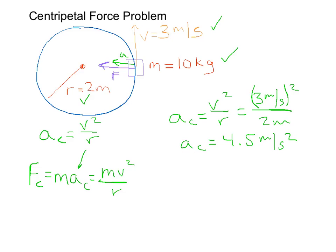Taking that and plugging it into the centripetal force equation, we can solve for FC, and that's simply equal to mass times centripetal acceleration. So that's equal to 10 kilograms times 4.5 meters per second squared. So we solve for the centripetal force, and that is 45 newtons.